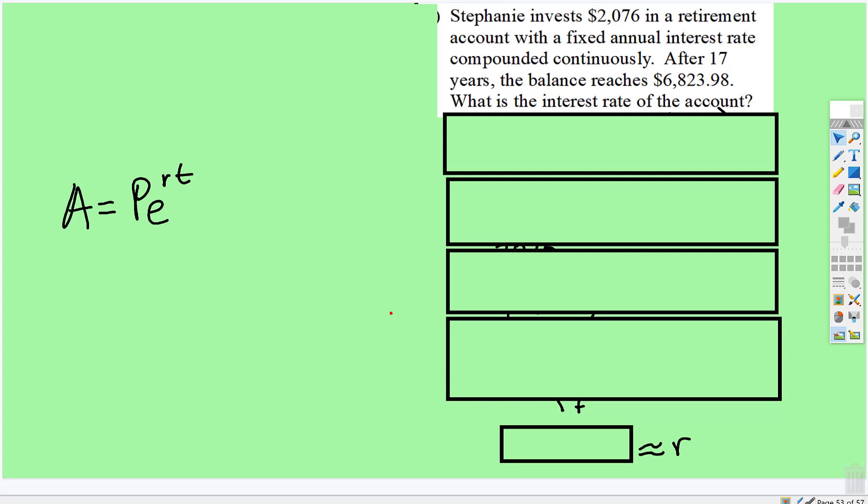Okay, now we're going to be solving a continuously compounding problem where we have a rate that is missing, so we have to fill in all the parts. Here's our account balance, here's our principal, and here's the number of years.